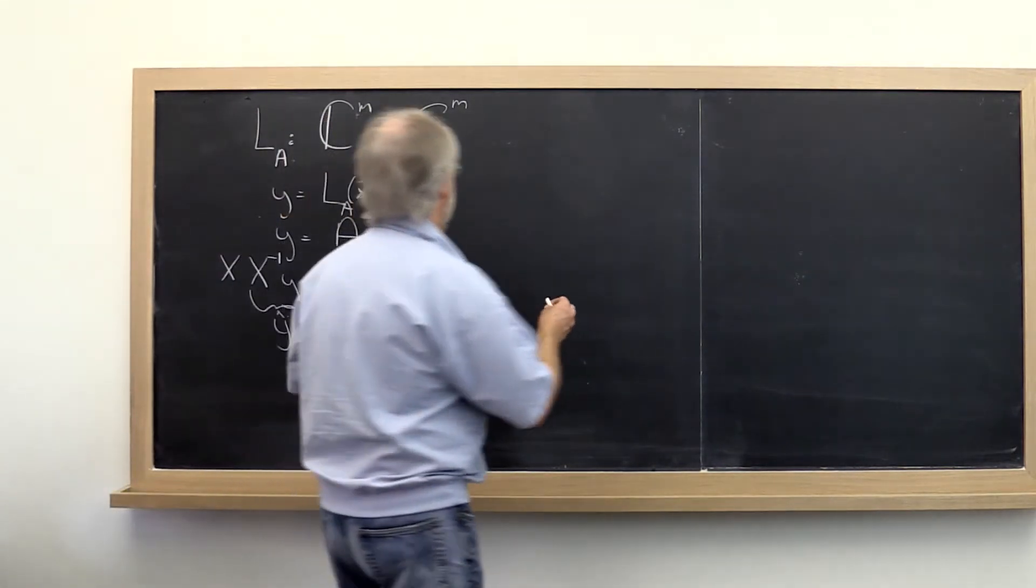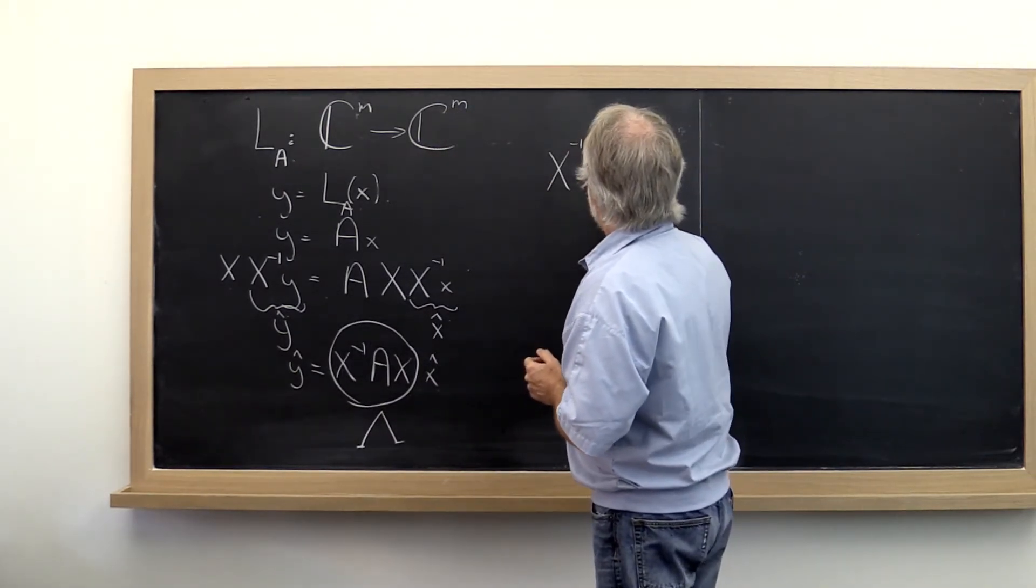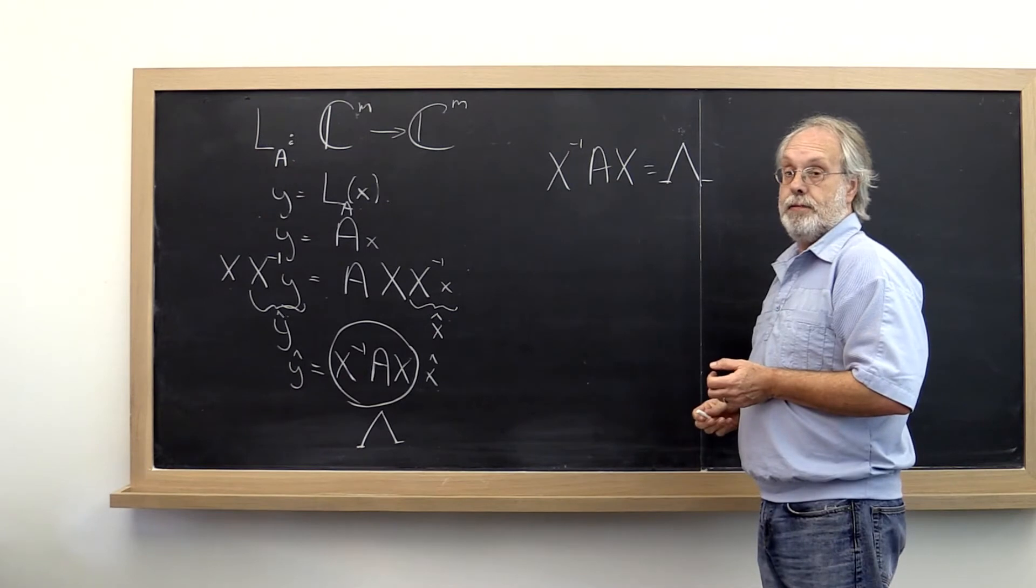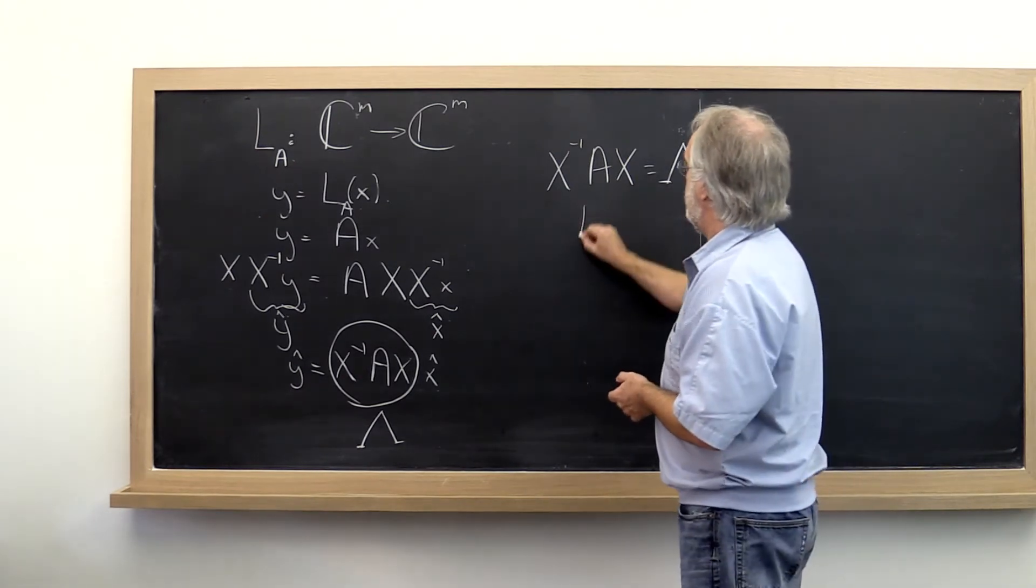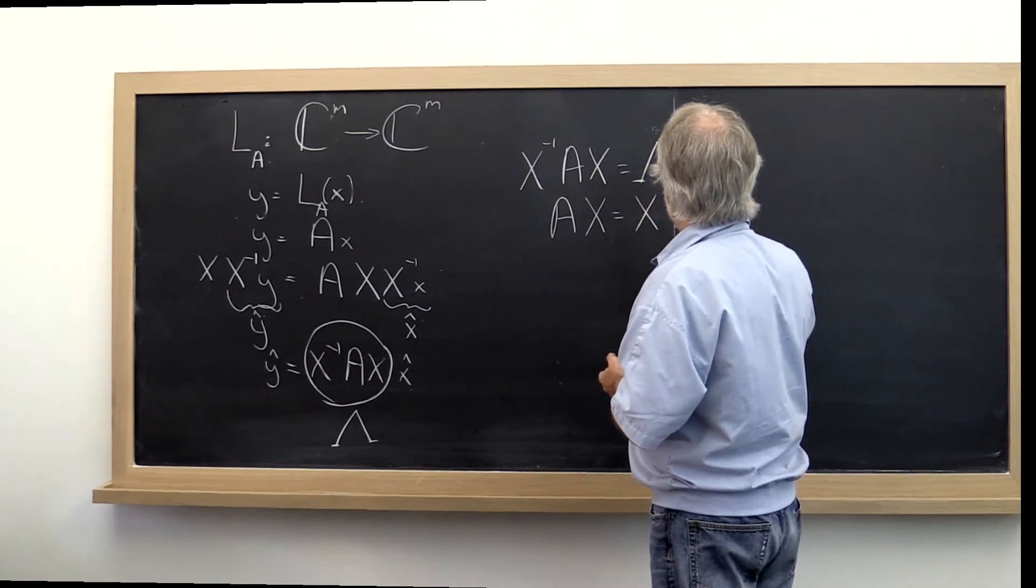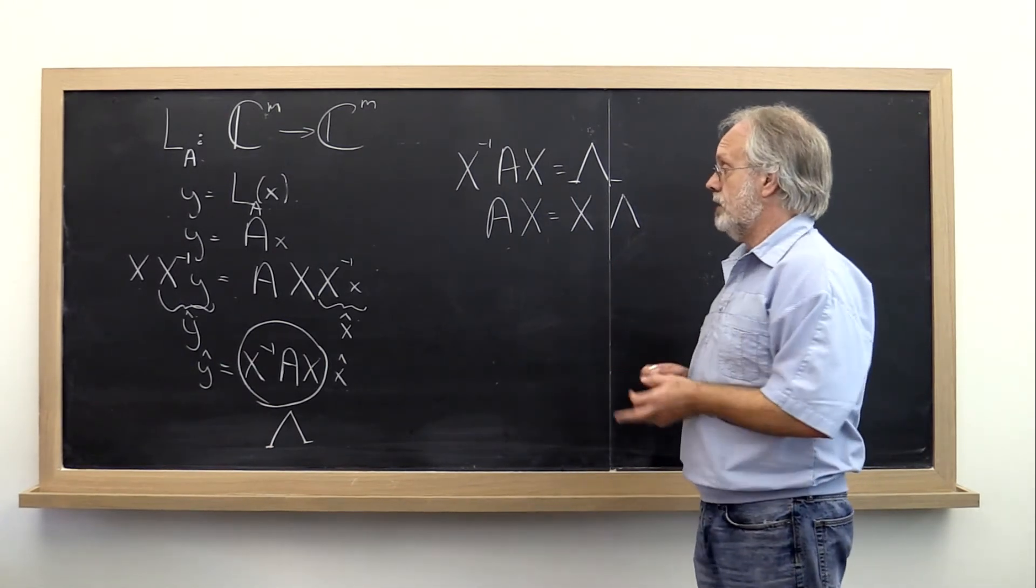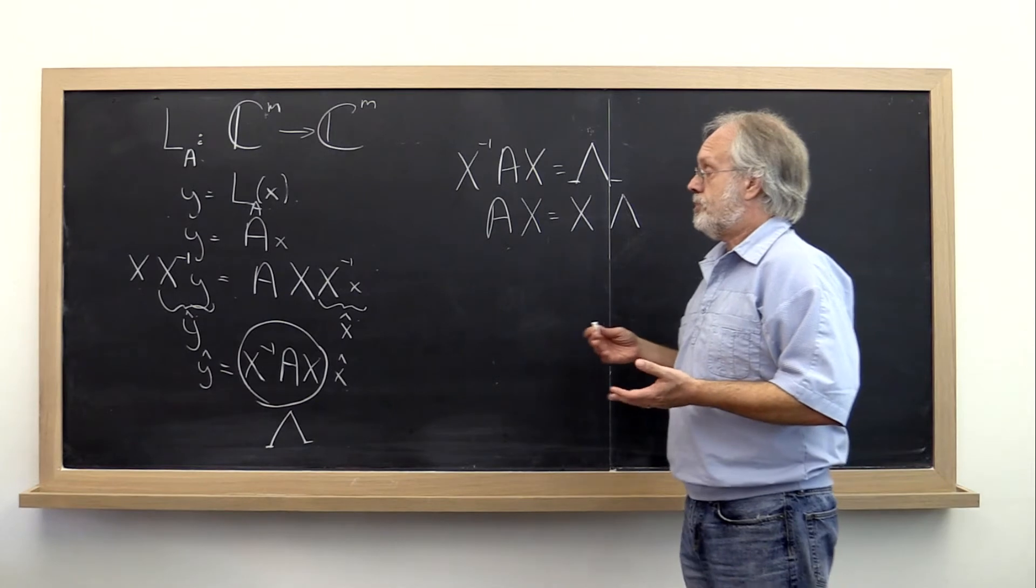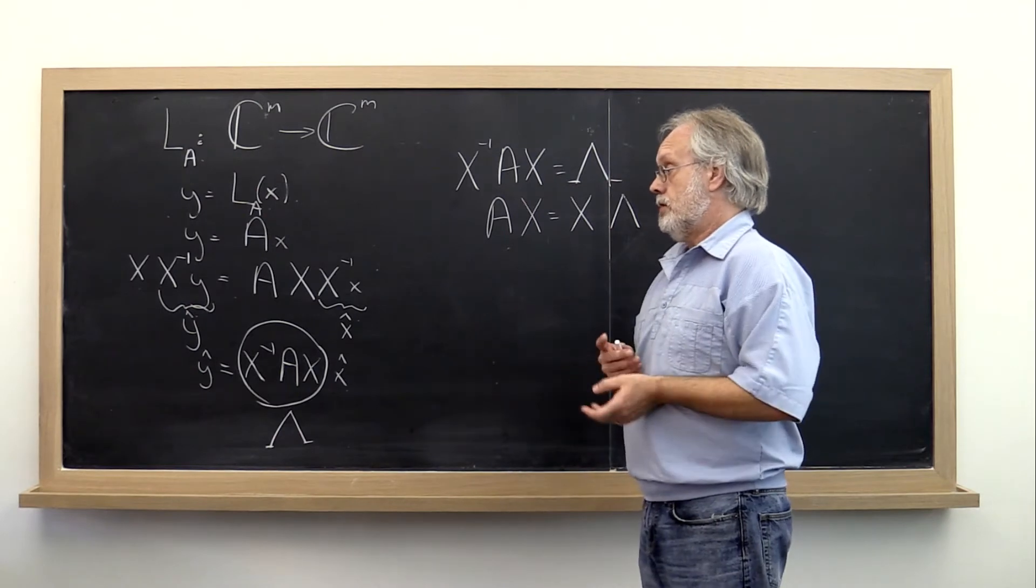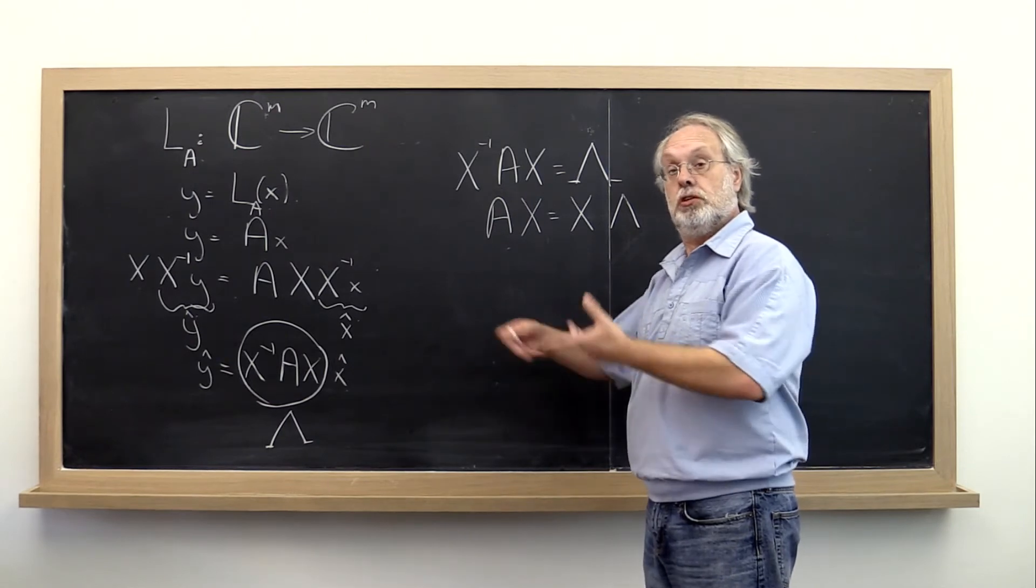Well let's have a look at that. What that then means is that X inverse times A times X is equal to lambda. We can rewrite that as A times X is equal to X times lambda. Now what do we like to do in this course? Well, we like to take matrices and bust them up by columns. And we already talked about the fact that X was the matrix where its columns were the basis vectors that we were using to express our vector in the new basis.